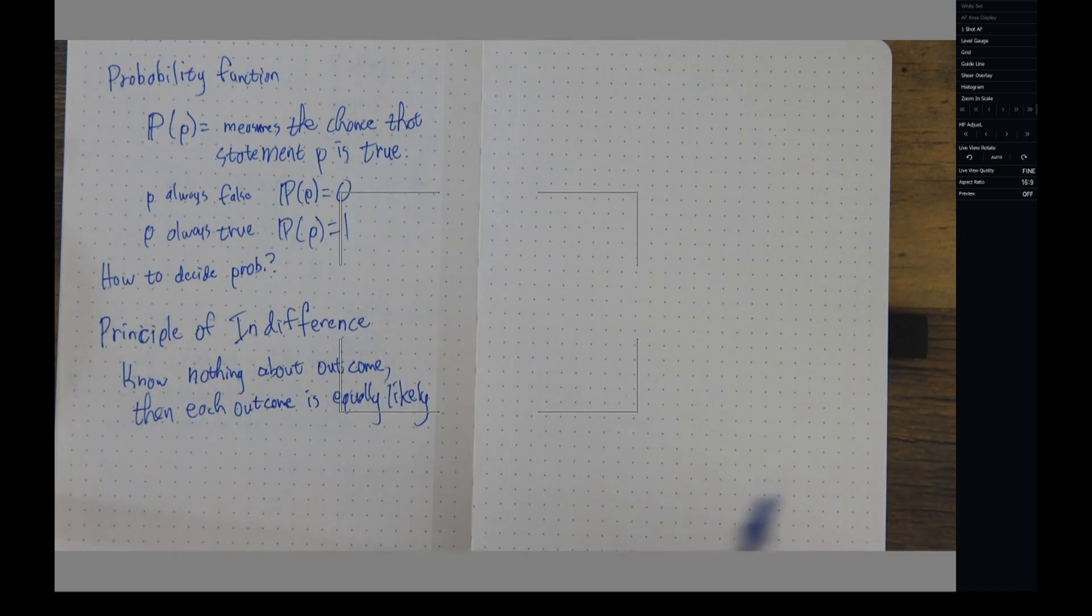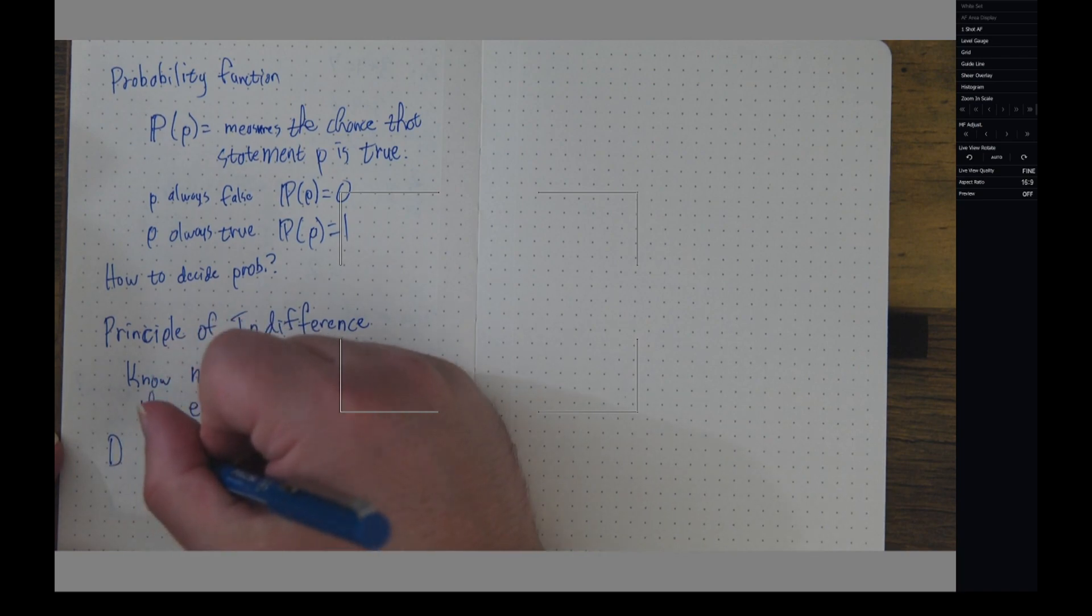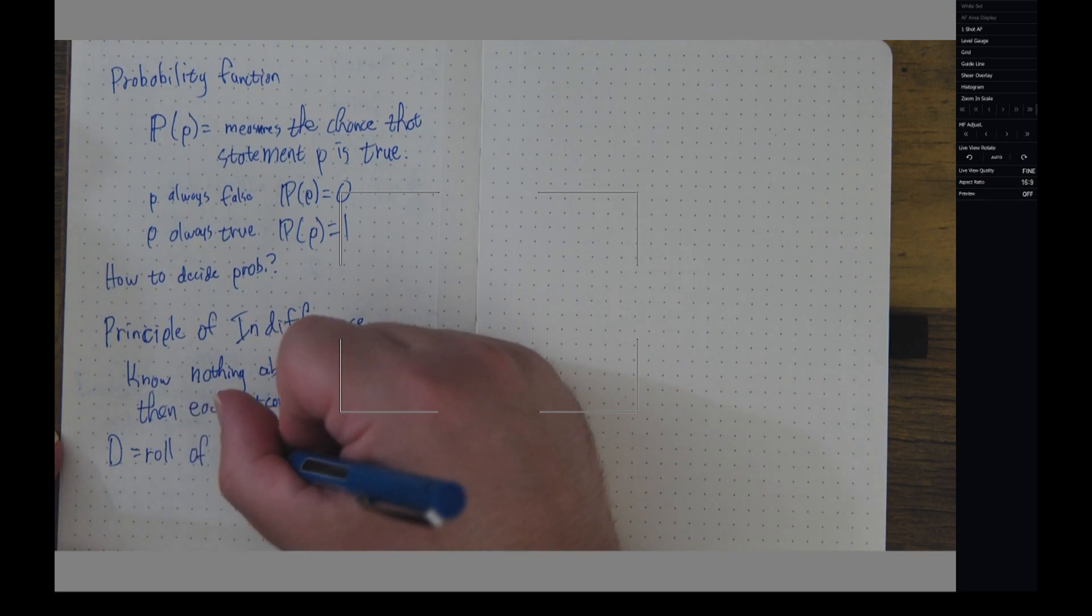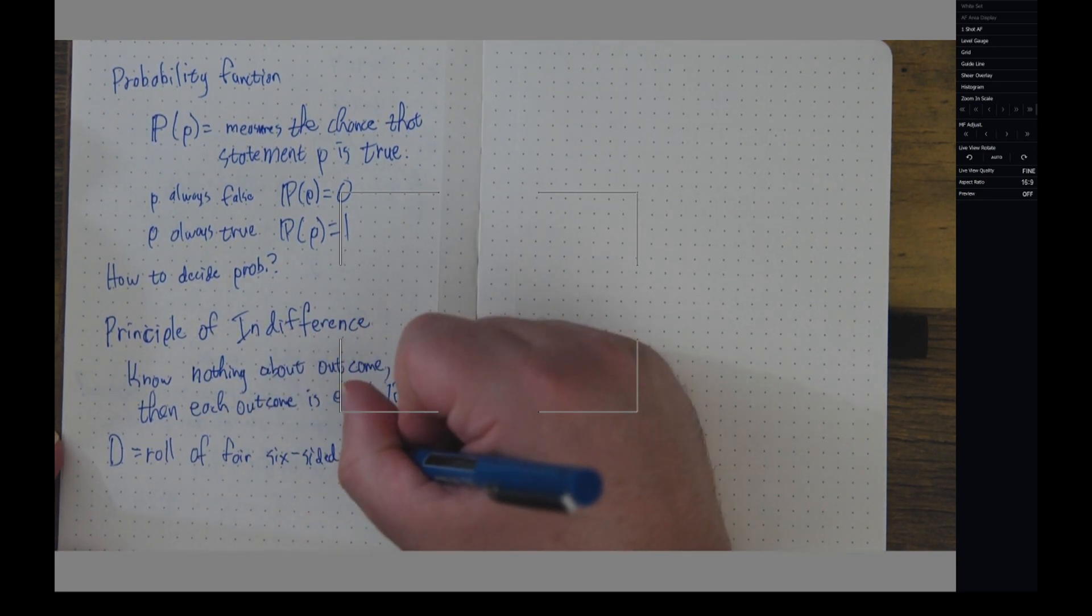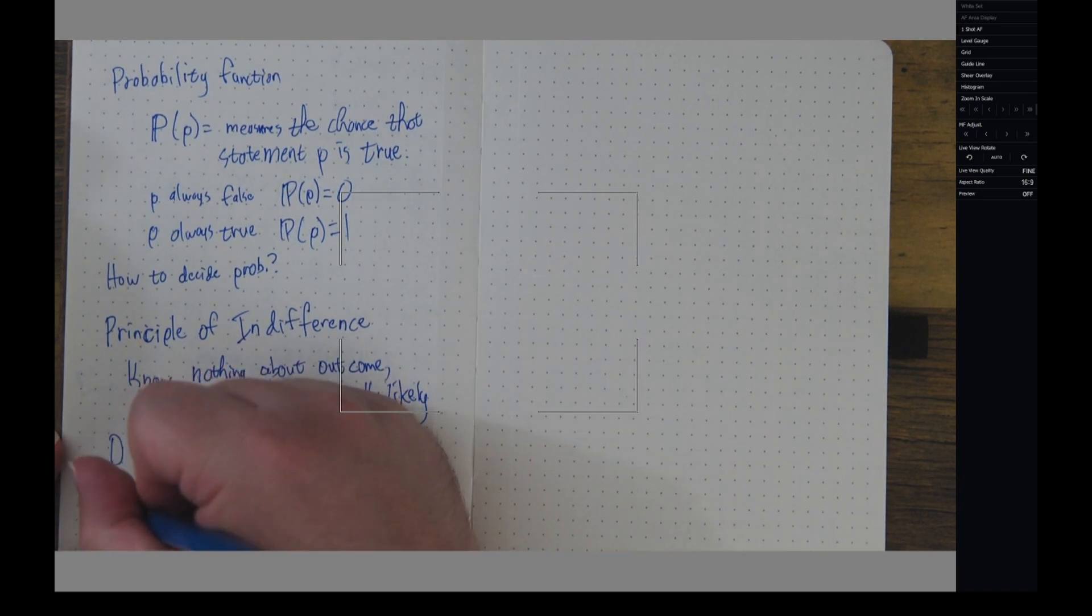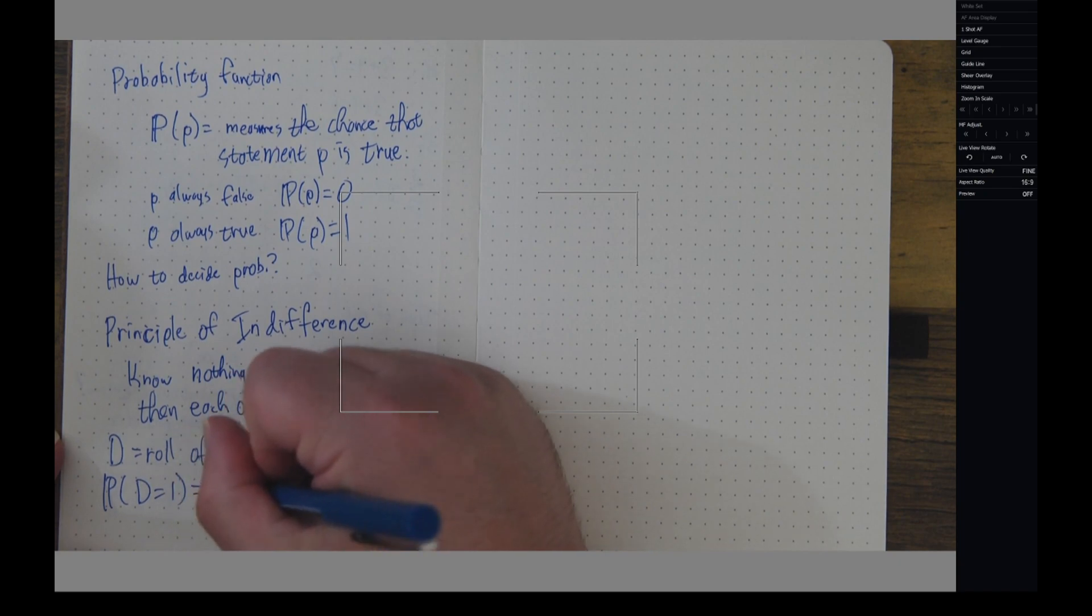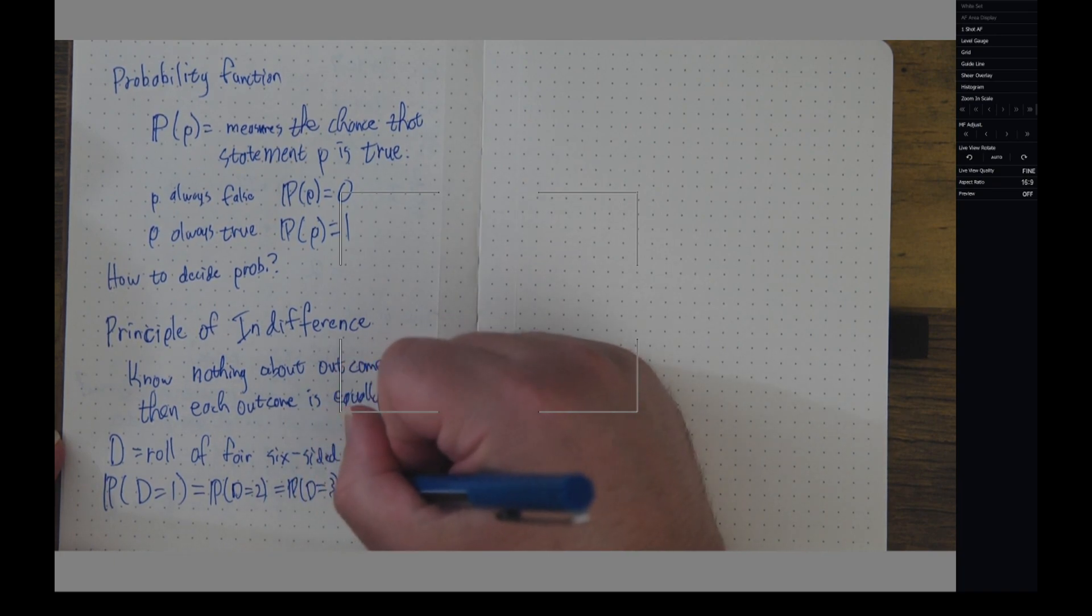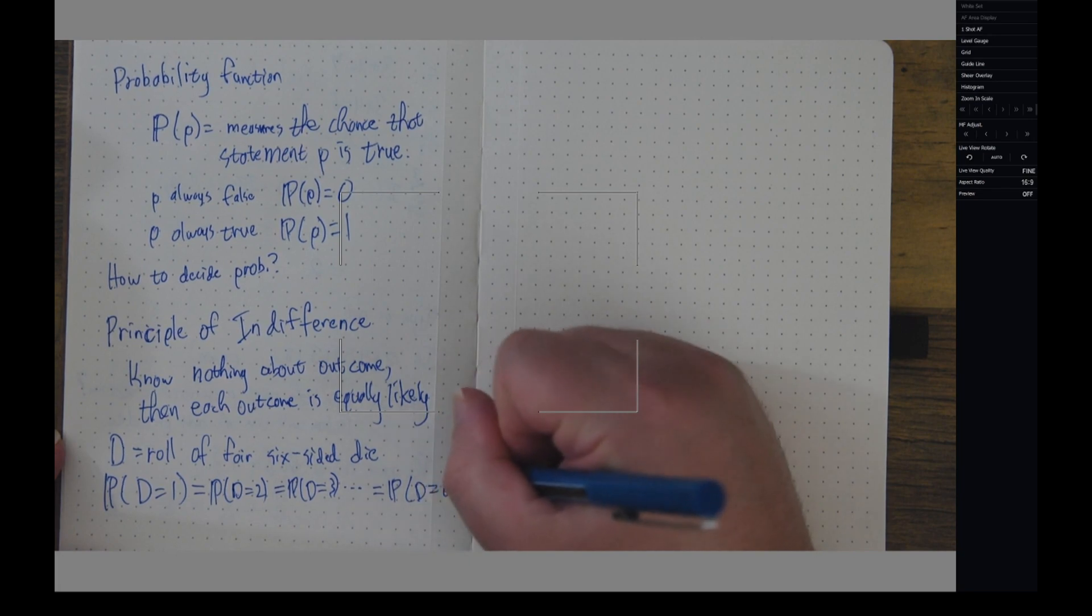So, what I'm going to say is if D is the roll of this fair six-sided die, I'm going to say that the probability that D equals one equals the probability that D equals two equals the probability that D equals three and so on up to the probability that D equals six. All of these things are equally likely.